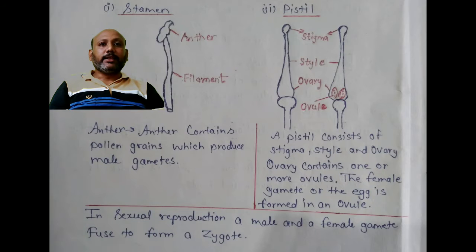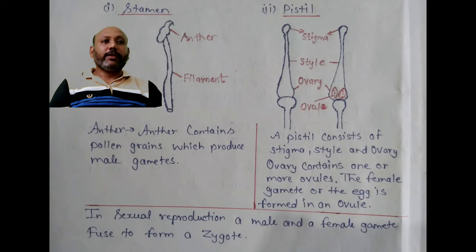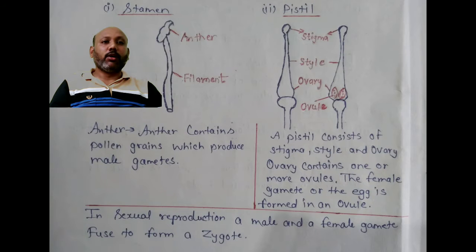The anther contains pollen grains which produce male gametes. A pistil consists of stigma, style and ovary. The ovary contains one or more ovules, and the female gametes or eggs are formed in the ovule.